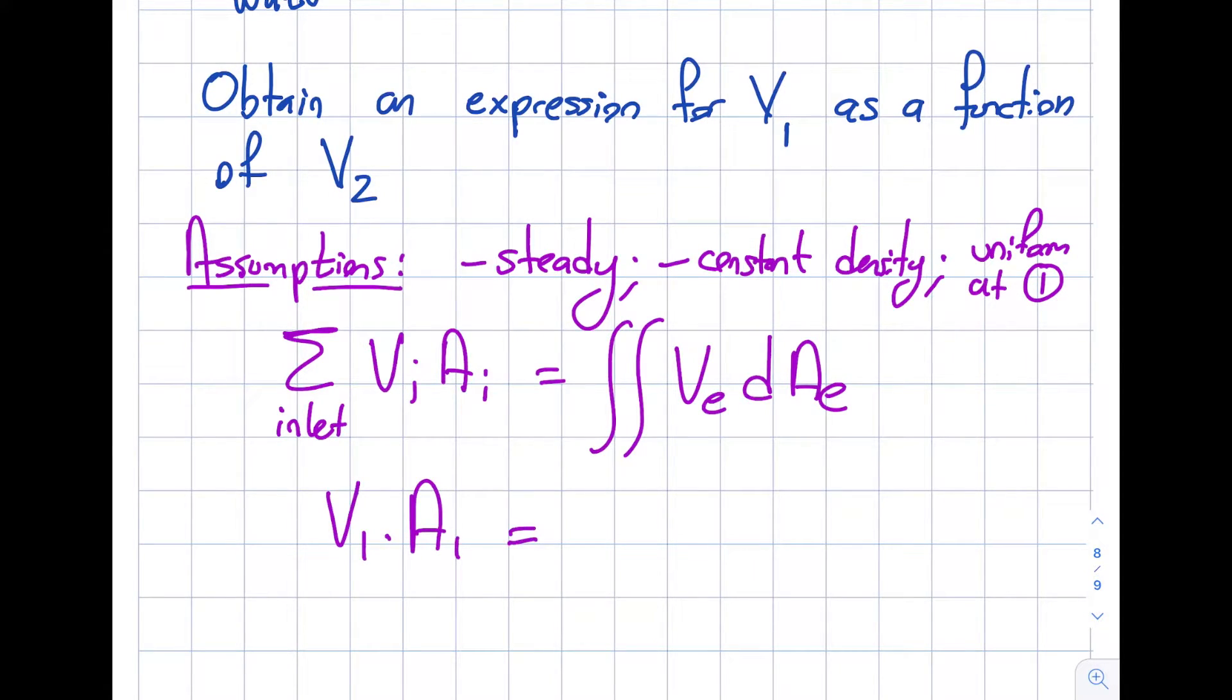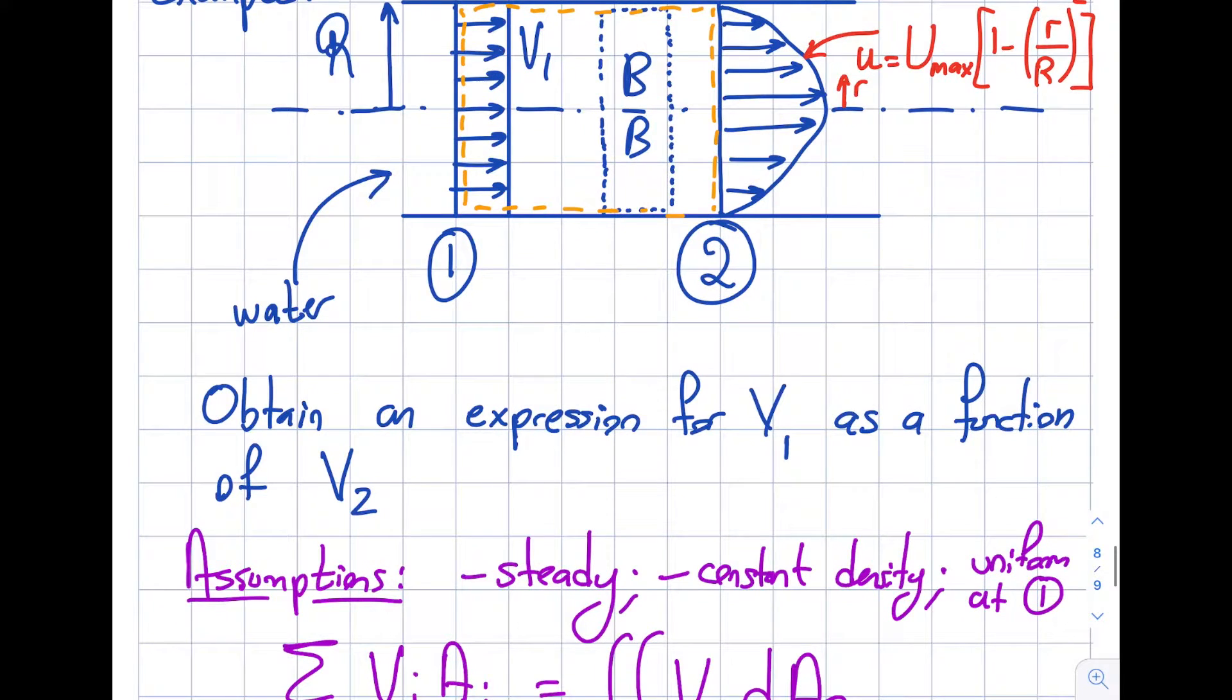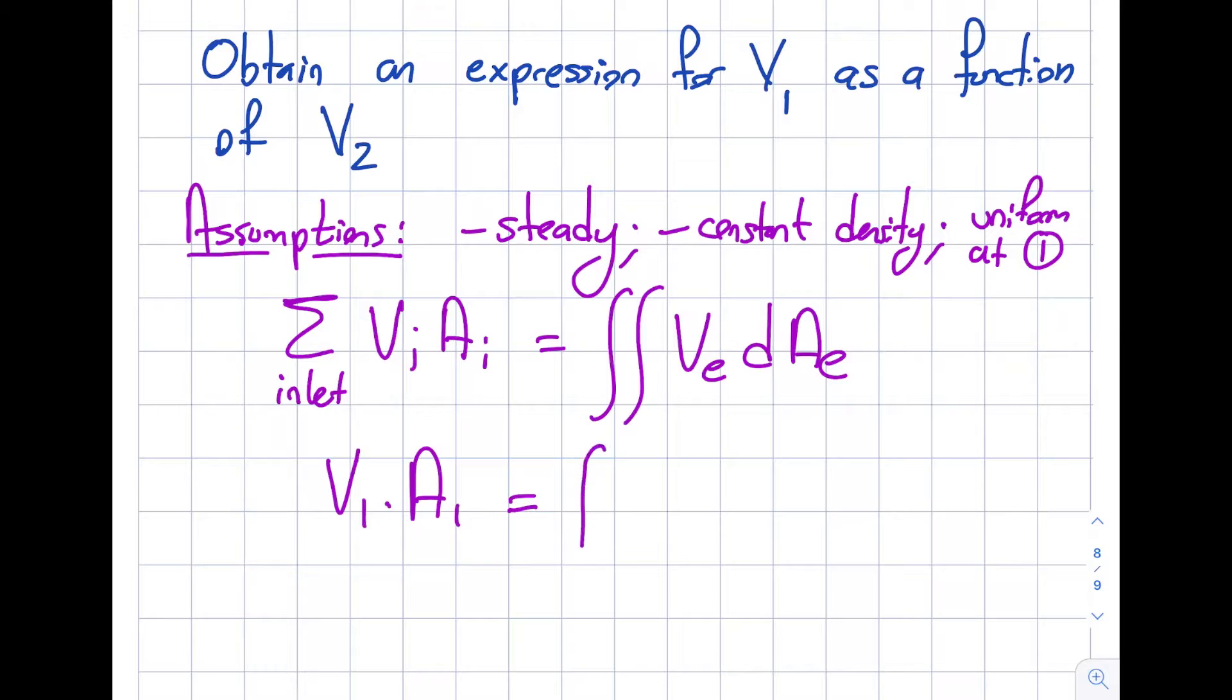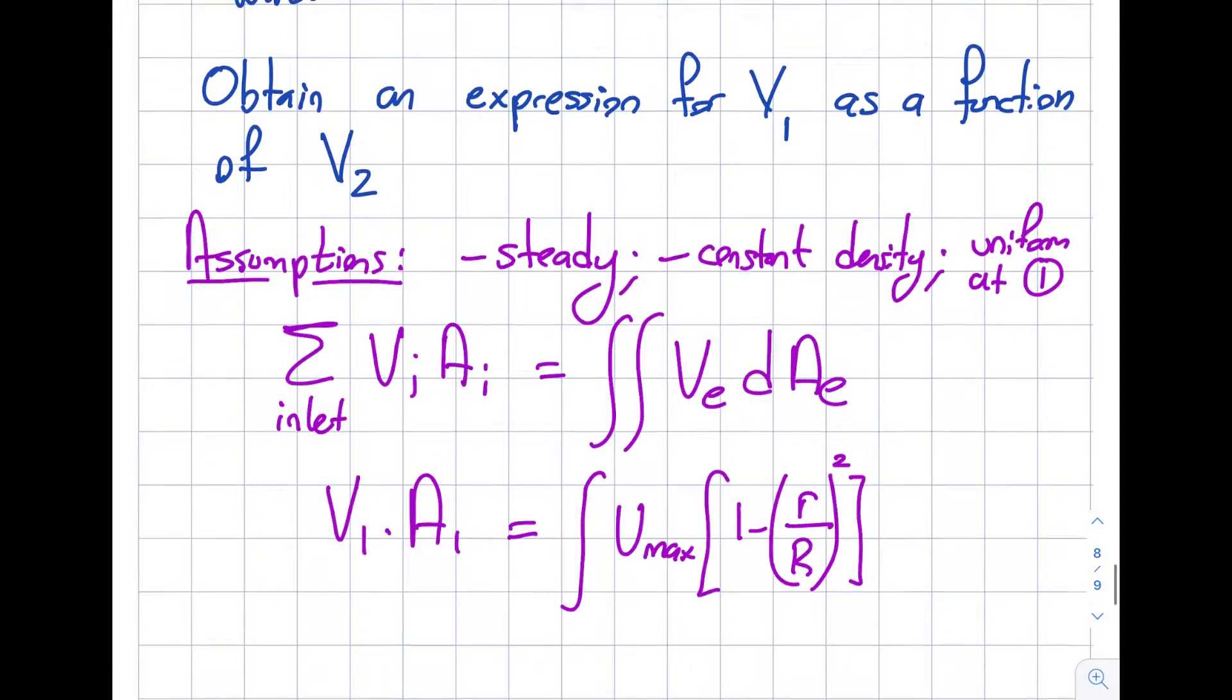The first one is V1 times A1. The second one becomes a little bit more complicated. So what I'm gonna do is I'm gonna pull my U from here and plug it in right over here. This is my V_exit. So far so good. Let's put one integral. This is gonna be U_max times 1 minus R divided by R squared.